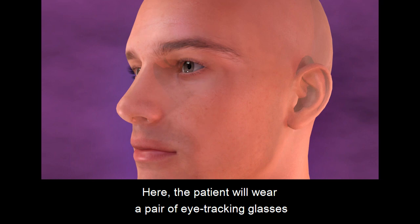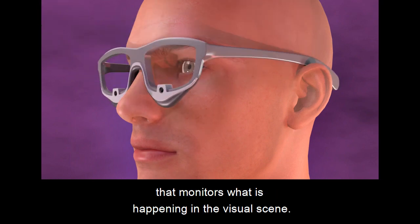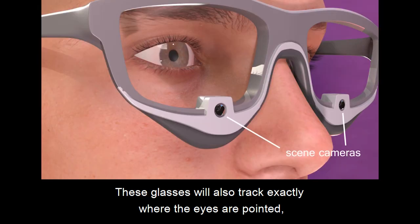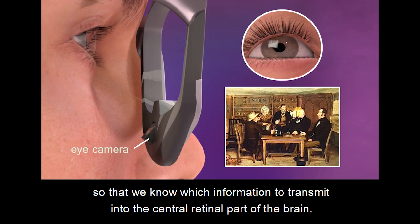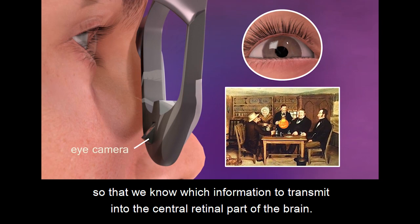Here, the patient will wear a pair of eye-tracking glasses that monitors what is happening in the visual scene. These glasses will also track exactly where the eyes are pointed so that we know which information to transmit into the central retinal part of the brain.